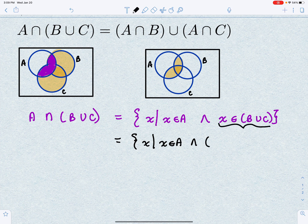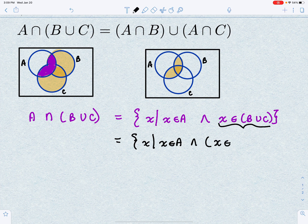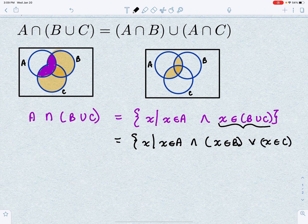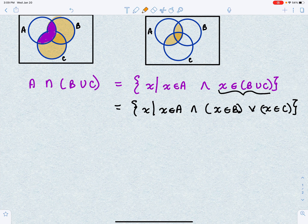Well, the definition of set union is X is an element of B or X is an element of C.